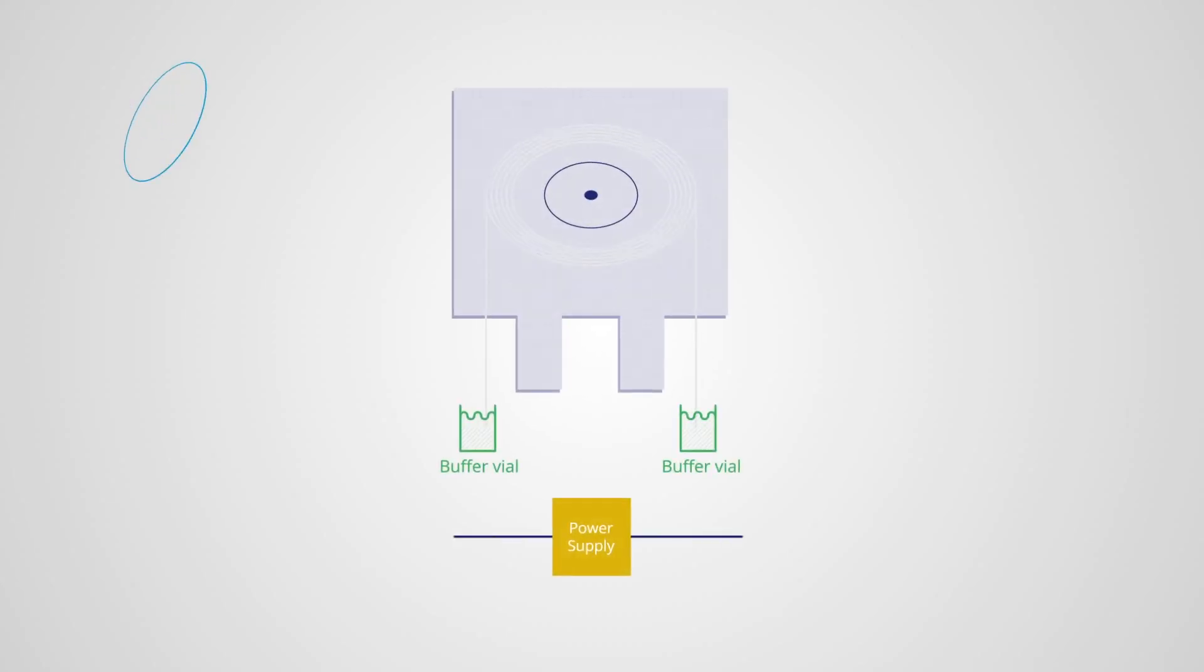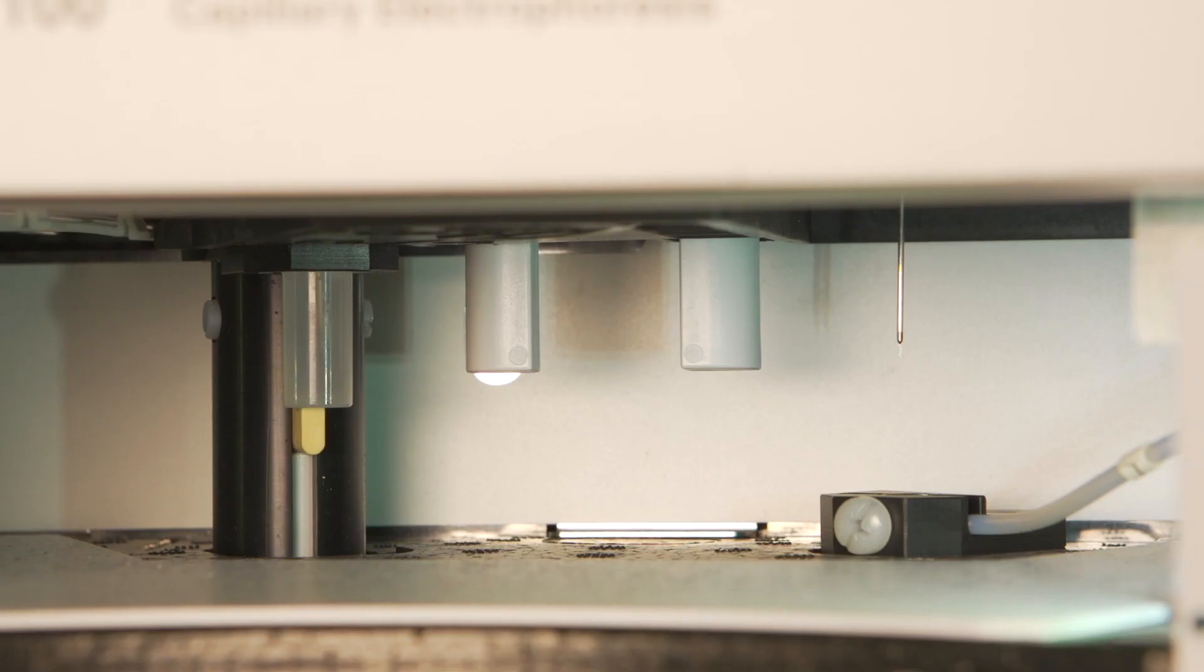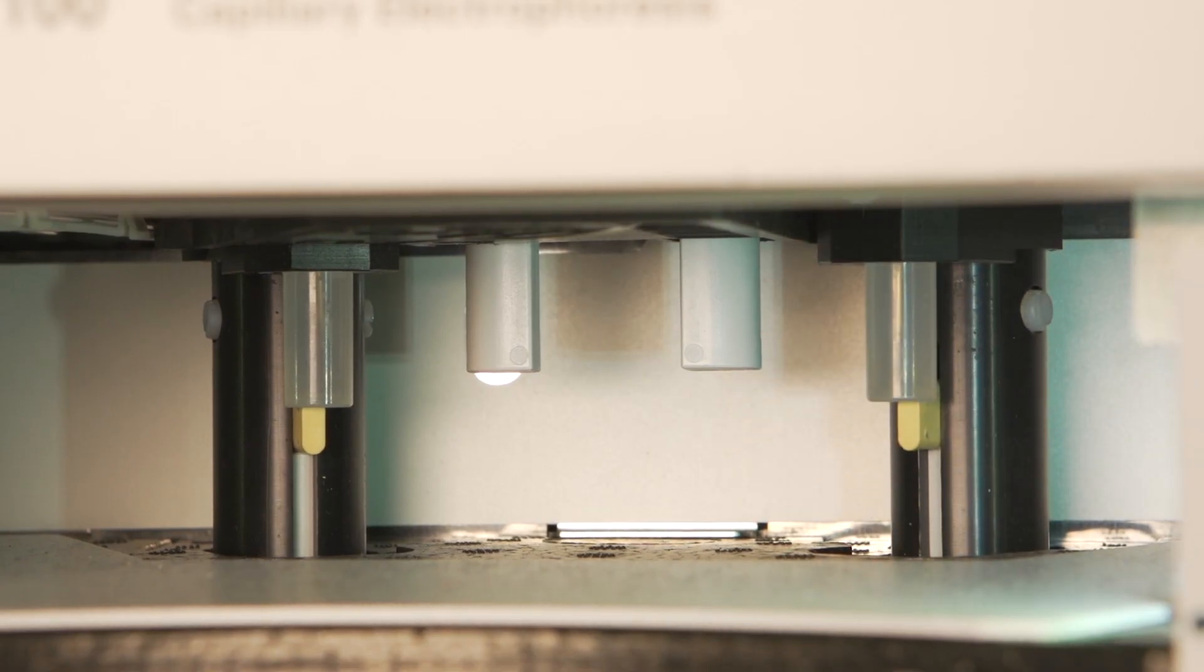Each end of the capillary is submerged into a separate vial. Each vial contains buffer solution and an electrode which is connected to the high voltage supply. Once the capillary is flushed thoroughly with the buffer,